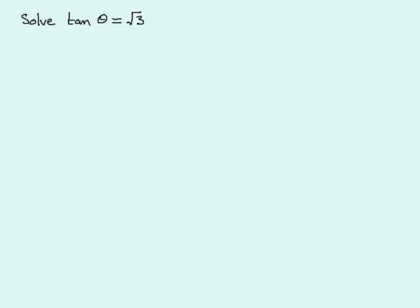Welcome to this tutorial on how to solve a trigonometric equation. In this example, the equation is tan(θ) = √3, a positive number. The method I'm going to use is called the quadrant method.